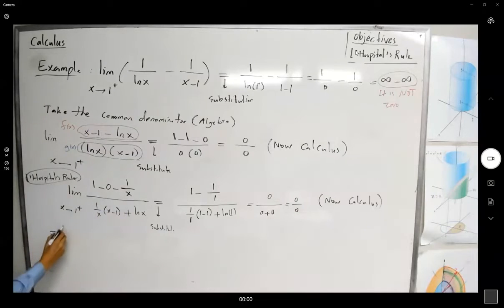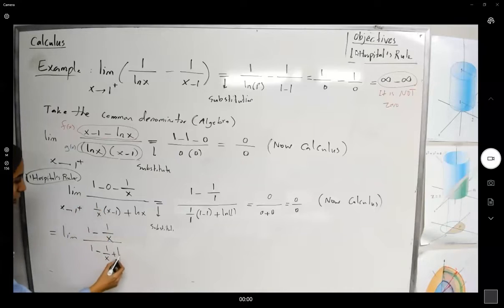So this is equal to the limit. I'm just going to write this in simpler form. 1 minus 1 over x divided by, I distribute 1 over x into parentheses. I get 1 minus 1 over x plus ln of x, as x goes to 1 to the right.